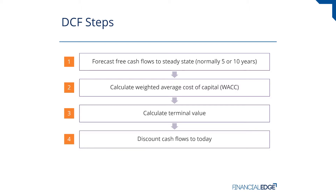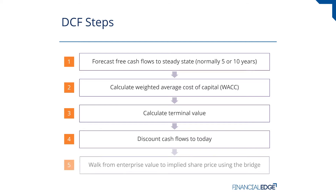So the cash flow in a year's time — I roughly take ten percent off that, and that will represent the present value of that cash flow. Once I've discounted all of those future cash flows, that gives me the enterprise value. I then walk from the enterprise value to the implied share price using the EV to equity bridge.